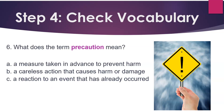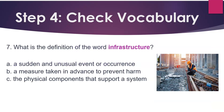Check vocabulary. Number 6: What does the term 'precaution' mean? A measure taken in advance to prevent harm. A careless action that causes harm or damage. A reaction to an event that has already occurred. Answer: A measure taken in advance to prevent harm. Number 7: What is the definition of the word 'infrastructure'? A sudden and unusual event or occurrence. A measure taken in advance to prevent harm. The physical components that support a system.